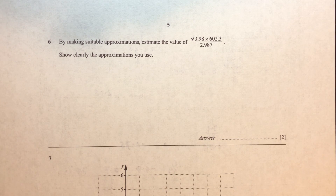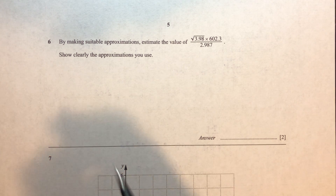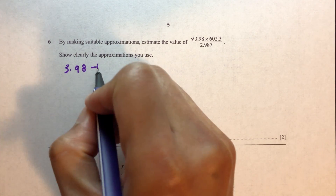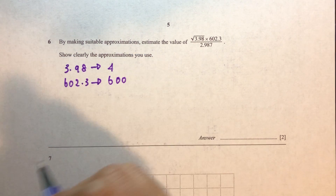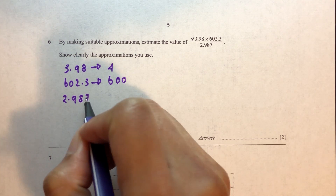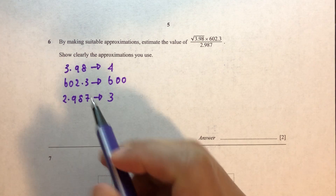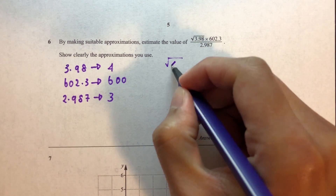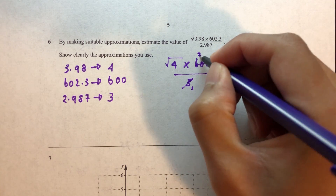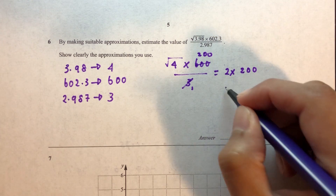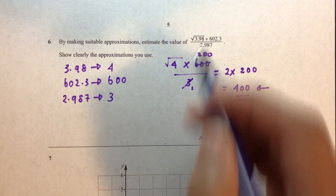Question number 6. By making suitable approximations, estimate the value of the fraction. We write everything to 1 significant figure: the square root of 3.98 becomes square root of 4; 602.3 becomes 600; 2.987 becomes 3. Replacing these values: square root of 4 times 600 divided by 3 equals 2 times 200, which is 400.